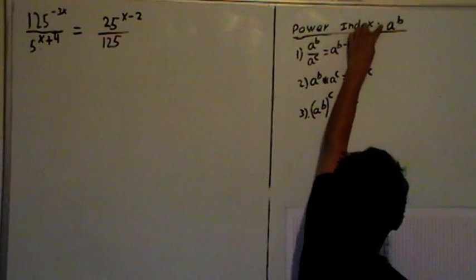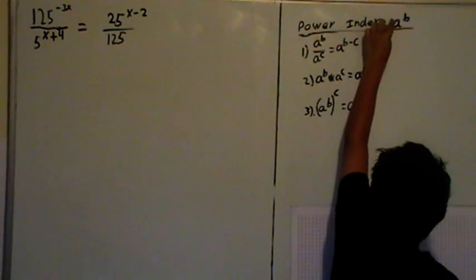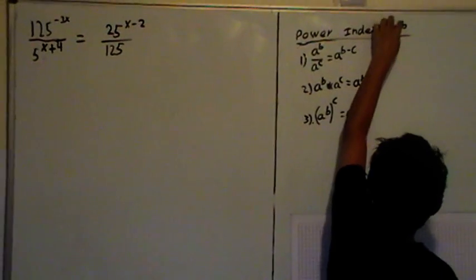This is the general form of writing a power index. A is the base, B is the power.